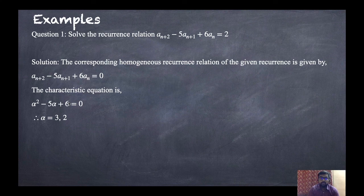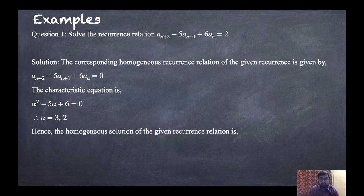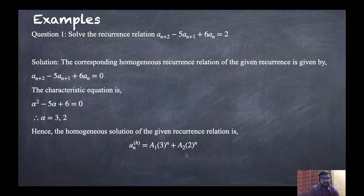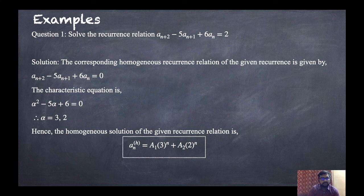For the homogeneous solution, we have two types: either the roots can be different or the same. Here the roots are distinct, so the homogeneous solution is ANH equals A1·3^N plus A2·2^N.